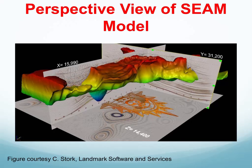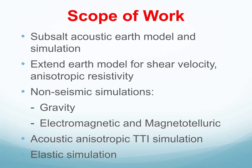The scope of work for the SEAM Phase I model was originally to develop the model and simulate an acoustic acquisition on it. We completed that, and then support from REPSI allowed us to extend the Earth model to be fully elastic and anisotropic. We included shear velocity and resistivity, which allowed us to do not only elastic simulation, but TTI simulation as well as gravity and electromagnetic simulations including controlled source EM and magnetotelluric simulations.